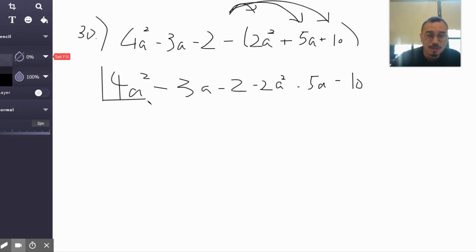4a squared and negative 2a squared, so that turns out to be 2a squared. Negative 3a and negative 5a, that's negative 8a.